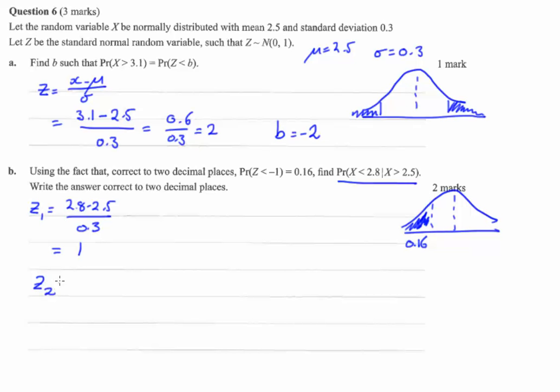And z2, well you could work it out, but you'll notice 2.5 is the mean. So when you normalize that, you expect it to be 0.